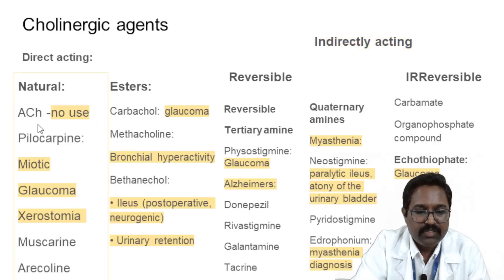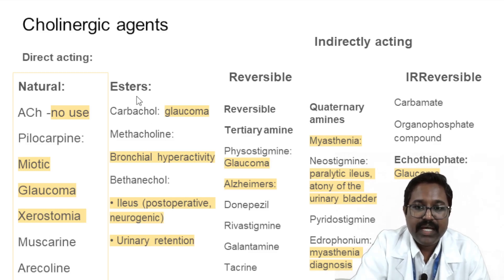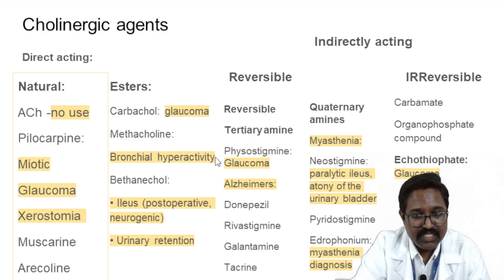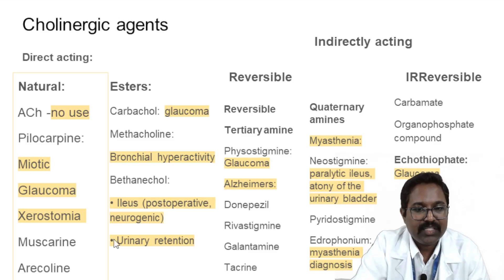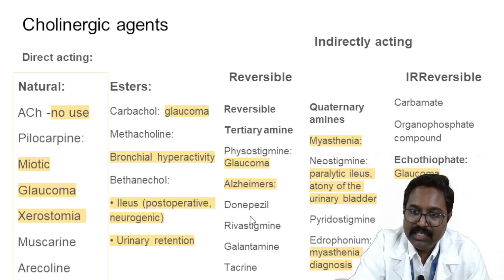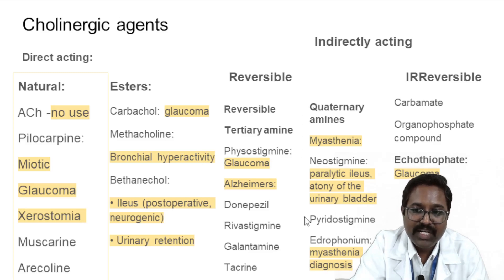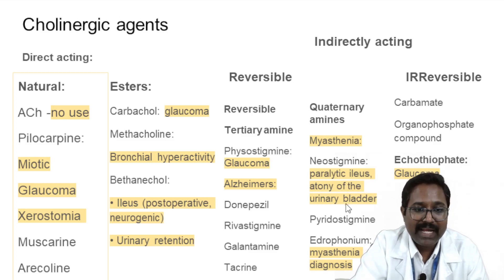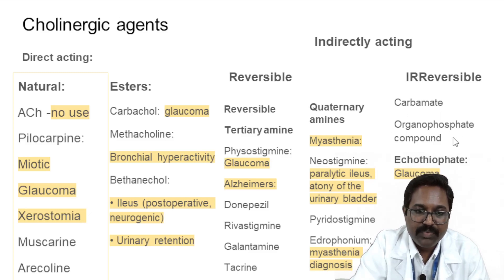Summary of uses: acetylcholine has no clinical use. Pilocarpine is used as a miotic agent in glaucoma and for xerostomia due to radiation and Sjögren's syndrome. Carbachol is used in glaucoma. Methacholine was previously used for bronchial hyperactivity testing but is not used now. Bethanechol — remember bowel and bladder — used for urinary retention and paralytic ileus, especially postoperative neurogenic paralytic ileus. Reversible cholinesterase inhibitors: physostigmine for glaucoma; donepezil, rivastigmine, and galantamine for Alzheimer's disease; neostigmine and pyridostigmine for myasthenia gravis. Neostigmine also treats paralytic ileus and atony of the urinary bladder. Edrophonium is used for diagnosis of myasthenia gravis. Echothiophate among irreversible inhibitors is used for glaucoma.